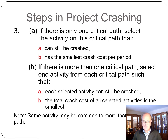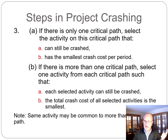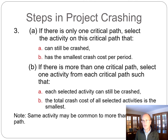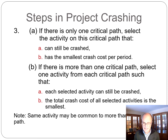If there is more than one critical path, select one activity from each critical path such that each selected activity can still be crashed and the total crash cost of all selected activities is the smallest. Note that some activities may be common to more than one critical path. Sometimes the temptation is to shorten the activity common to two critical paths because it's easiest, but if it costs more than two separate activities on individual critical paths together, that doesn't make sense. That's the key trick to watch for in a crashing question.